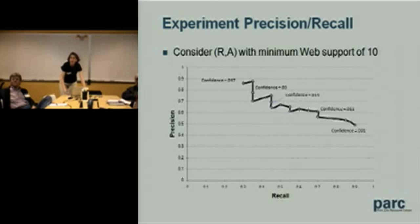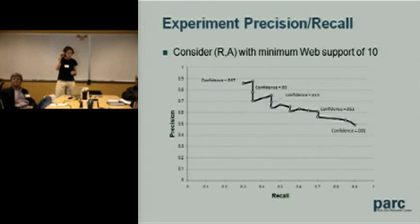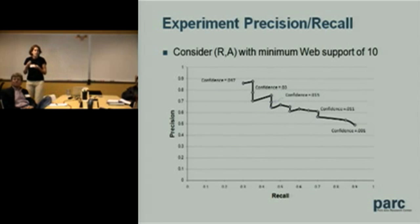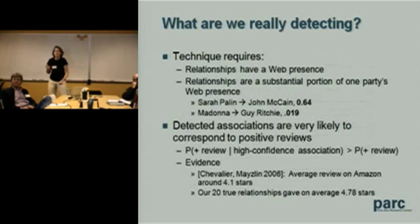Here's how it turned out: taking confidence as low as 0.001, you can get up to around 90% recall on this small dataset. We couldn't get all the way to 100% because we required minimum web support of 10 — below that, hits were dominated by the Amazon.com review pages themselves with no real evidence. At the other end of the spectrum, going up to about 90% precision with around 35% recall. So it looks like it could work in at least some communities. An important limitation is that the relationship needs to be a substantial portion of one party's web presence.